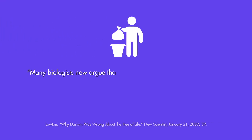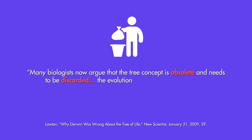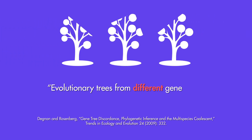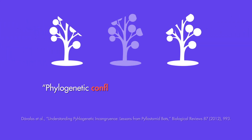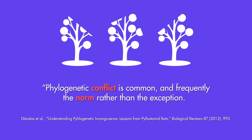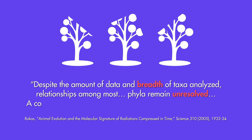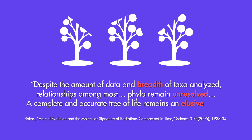Sivanen's study is not the exception. The New Scientist pointed out that many biologists now argue that the tree concept is obsolete and needs to be discarded — the evolution of animals and plants isn't exactly tree-like. The magazine went on to describe the Darwinian project of mapping out the tree of life as lying in tatters, torn to pieces by an onslaught of negative evidence. Trends in Ecology and Evolution pointed out that evolutionary trees from different genes often have conflicting branching patterns, and Biological Reviews acknowledged that phylogenetic conflict is common and frequently the norm rather than the exception. Antonis Rokas, considered a leading figure in genetic homology, concluded that relationships among most phyla remain unresolved and that the complete and accurate tree of life remains an elusive goal.